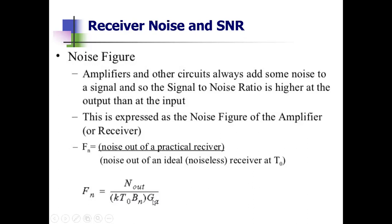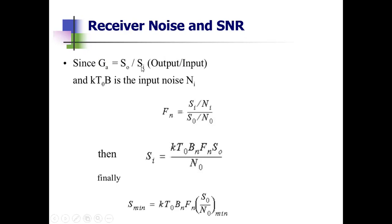Available gain Ga equals S_out divided by S_in, where S_out is the output signal and S_in is the input signal. This expression assumes input and output are perfectly matched — impedance matching is done to avoid reflections and standing waves. In the expressions, Bn is used, but in practical scenarios we approximate Bn with B, so the input noise becomes K·T₀·B.